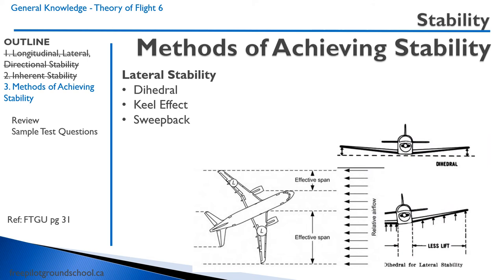There are a number of methods of achieving lateral stability — that's stability about the longitudinal axis, so wing left or wing low on either side. We can have dihedral, where the wingtips are higher than the wing root when viewed from the front. If the aircraft gets disturbed and one wing is lower, there's going to be more lift on that wing and it will raise back up. It could also have a keel effect on high-wing aircraft, where the heavy fuselage in the middle provides lateral stability.